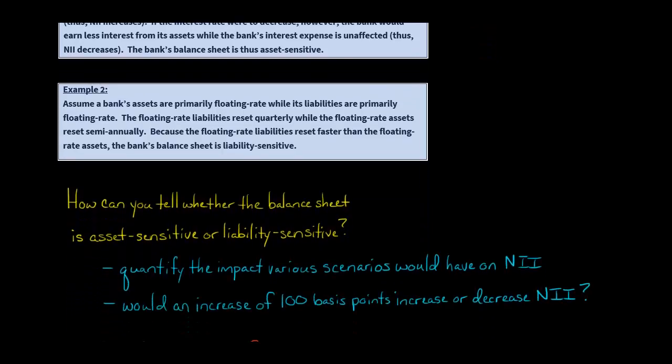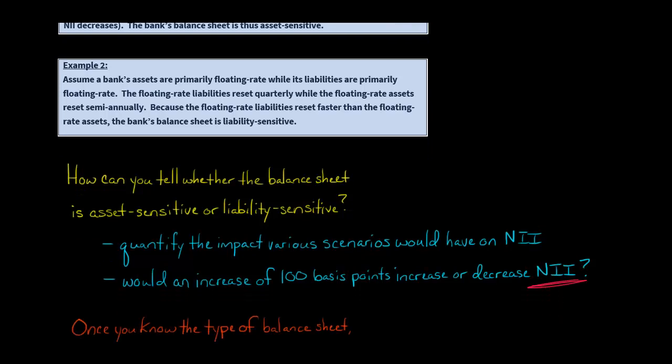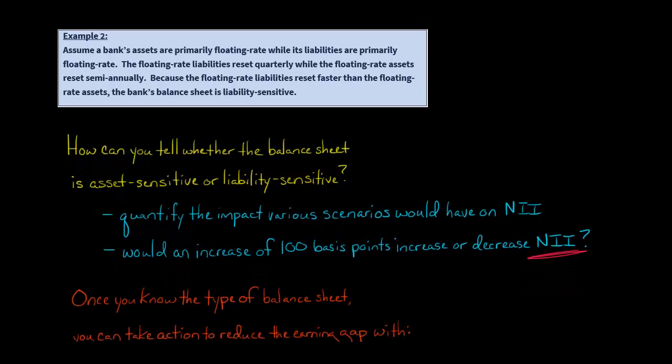So how do we know whether a balance sheet is asset sensitive or liability sensitive? We can look at different scenarios and say, if there was an increase of 100 basis points in the interest rate, what will happen to net interest income — would it go up or go down? If every time there's an increase in interest rates net interest income goes up, then we say this is an asset sensitive balance sheet.